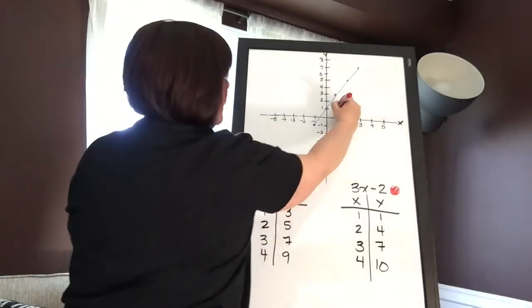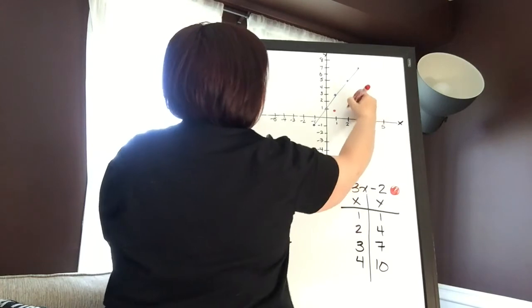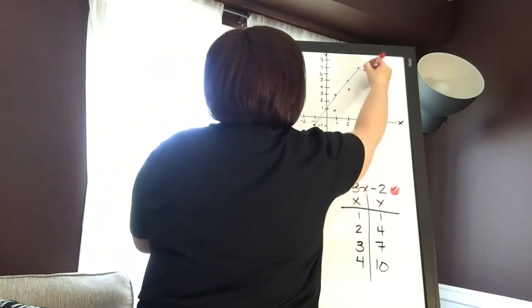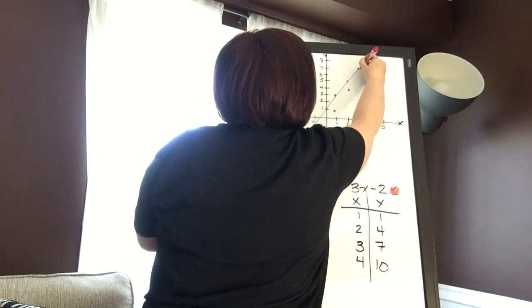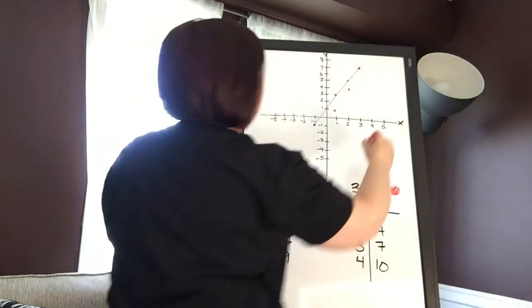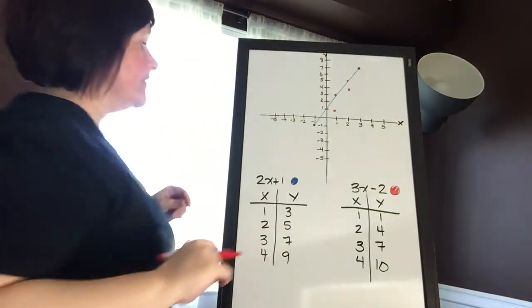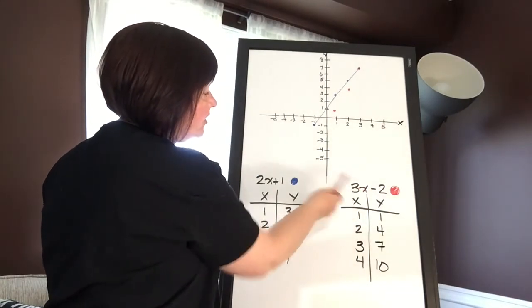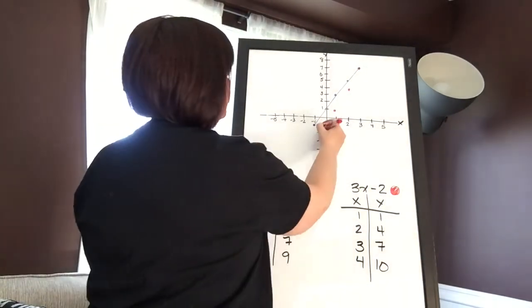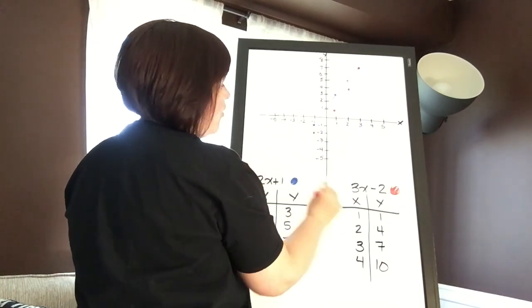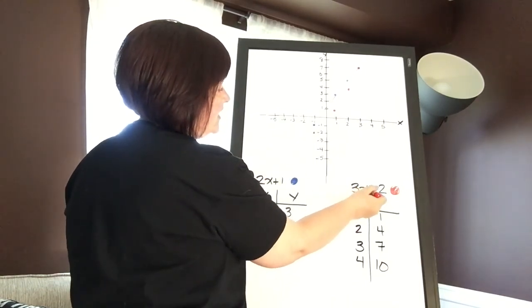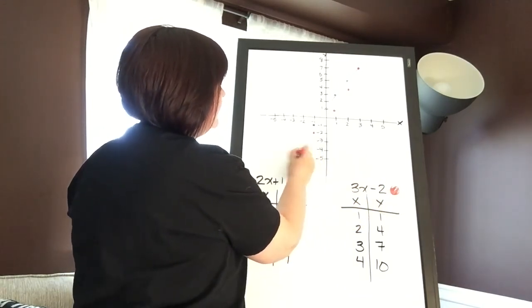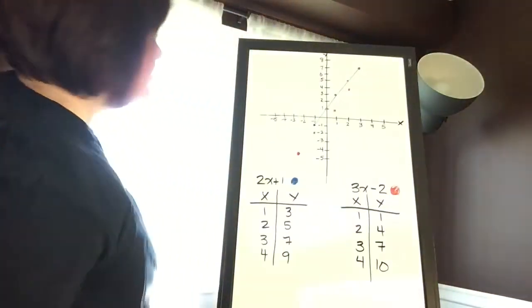3x minus 2 is going to be red. So you're going to have to indicate it to me. So the next one is 1, 1. The next one is 2, 4. The one after that is 3, 7, which they share a point. And then 4, 10, again way, way, way up at the top. Again, I can go back though and do 0. So 3 times 0 is 0 minus 2 is negative 2, so it would be there. Or I could do negative 1. 3 times negative 1 is negative 3 minus another 2 is negative 5, so it would be here. And then once you start drawing all of your lines and comparing all of your slopes.